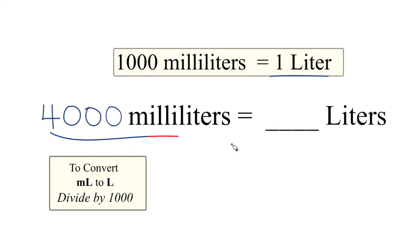Okay, let's convert 4,000 milliliters to liters. The first thing you need to know is that 1 liter is equal to 1,000 milliliters.